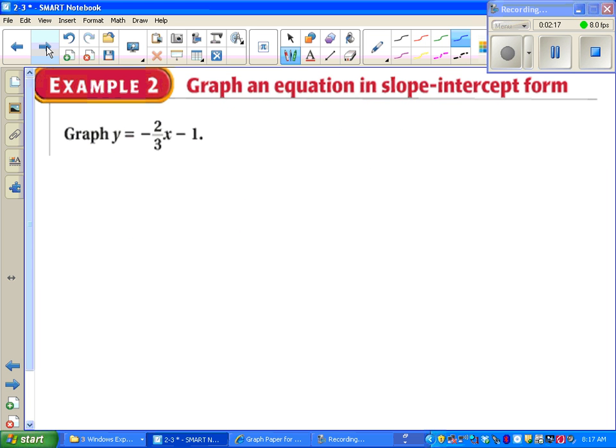We have y equals negative two-thirds x minus one. So just as before, we're going to find our y-intercept, negative one, and put a dot. This time our slope is negative two over three. So instead of going up two, I go down two and then over three. And a quick check to make sure I drew it right is my line is going downhill, which makes sense because I have a negative slope.